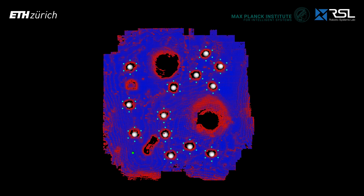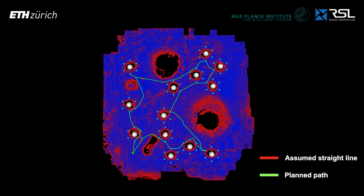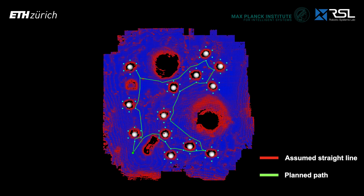The paths connecting POIs are initially assumed to be straight lines. Dynamic programming outputs the optimal POI and resulting paths. The collision-free paths are then planned accordingly to update the path cost. Dynamic programming is applied again to update the optimal POI, and the collision-free paths are again planned. The process iterates until convergence.